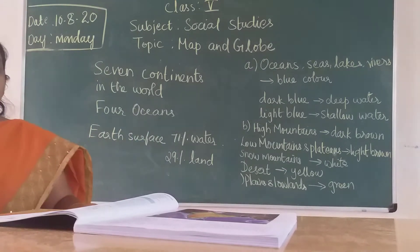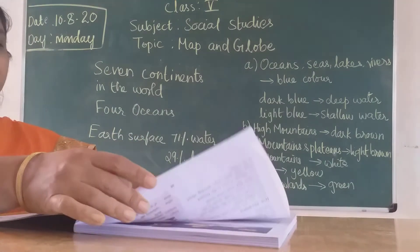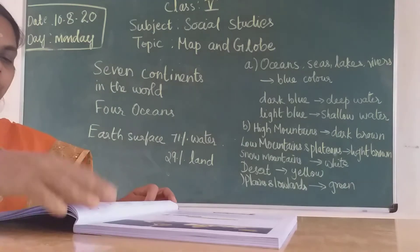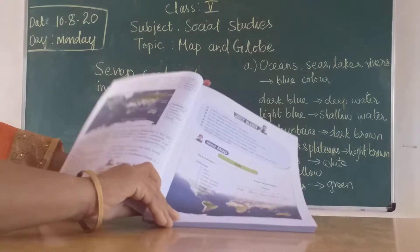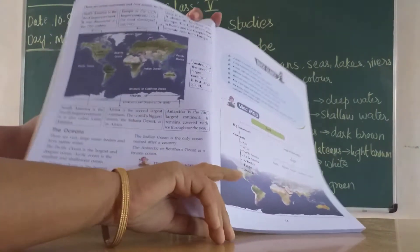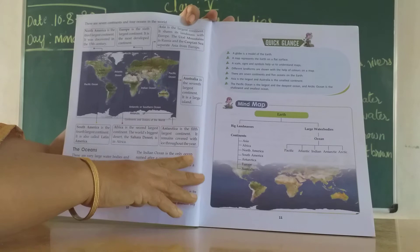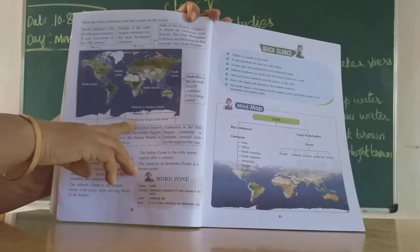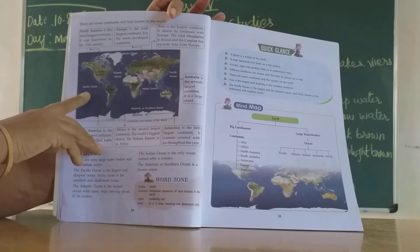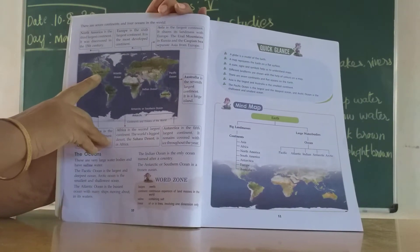We are going to see this in detail in your book, children. Go to page number 20. Can you see, children? This is our world map. Now observe what are the continents over here.